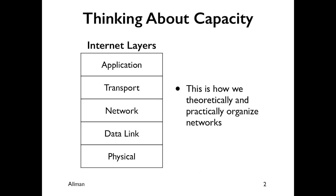This is something probably most people have seen — sort of how we organize networks. This is the layering model of networks, this is how we organize networks. It works in theory and also in practice. This is where we talk about layer two — Mike was talking about layer two before — the data link layer.